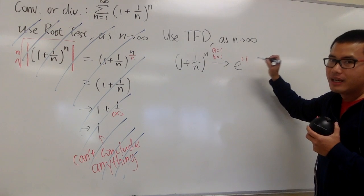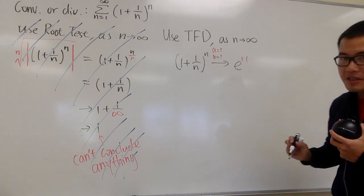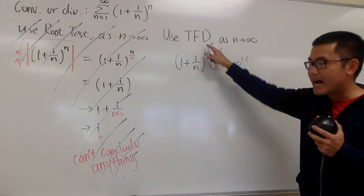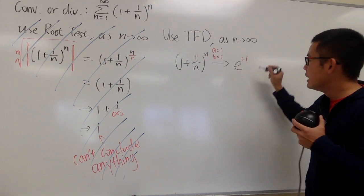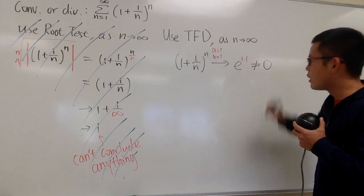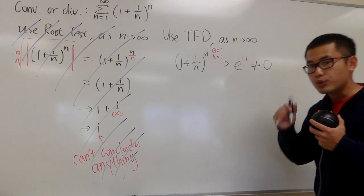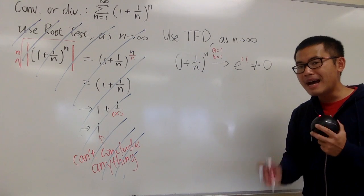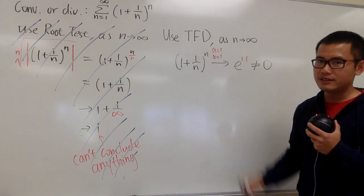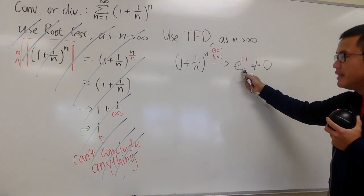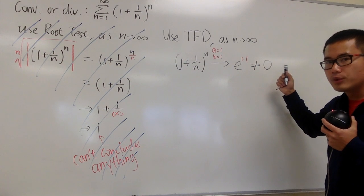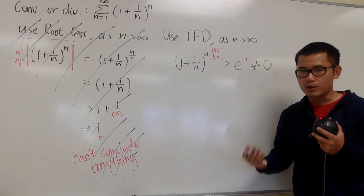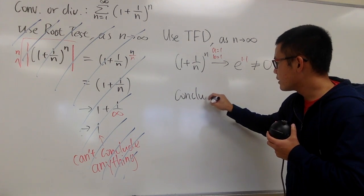And more importantly, this right here, you have to tell me that if you're using test for divergence, you have to tell me that this limit here is not equal to 0. Do not put down this is greater than 1, even though it's true. But when you're using the test for divergence, you have to tell me that this limit is not equal to 0, and because this is not equal to 0, we get to draw a conclusion.